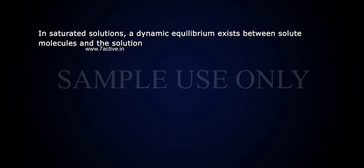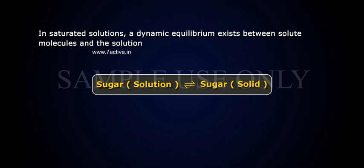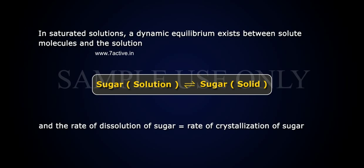Equilibrium involving dissolution of solids in liquids. In saturated solutions, a dynamic equilibrium exists between solute molecules and the solution. For example, sugar solution in equilibrium with sugar solid, and the rate of dissolution of sugar equals the rate of crystallization of sugar.